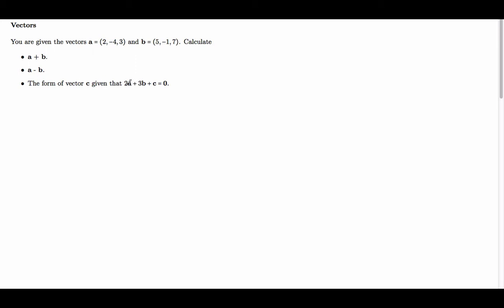Given that we have 2a plus 3b plus c is equal to the zero vector. So looking at a plus b, we have a, which is 2, minus 4, 3. We're adding it to b, which is 5, minus 1, 7.